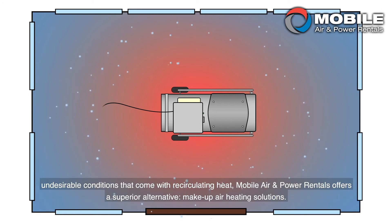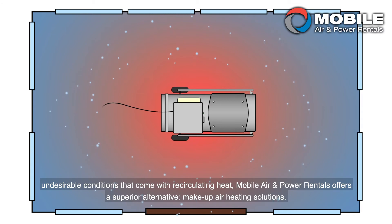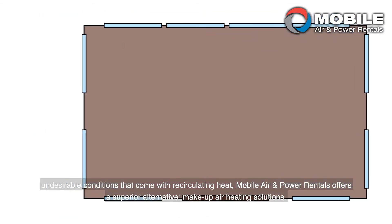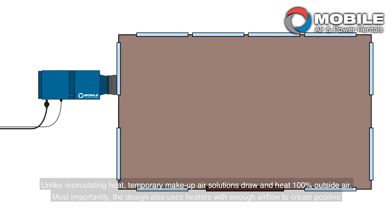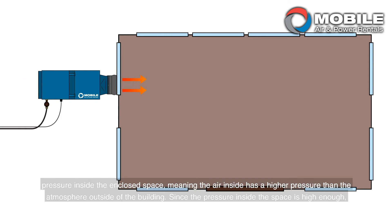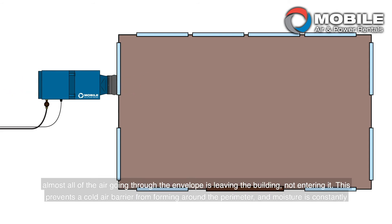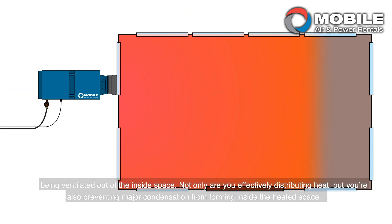To avoid the potentially undesirable conditions that come with recirculating heat, Mobile Air and Power Rentals offers a superior alternative: make-up air heating solutions. Unlike recirculating heat, temporary make-up air solutions draw and heat 100% outside air. Most importantly, the design also uses heaters with enough airflow to create a positive pressure inside the enclosed space, meaning the air inside has a higher pressure than the atmosphere outside. Since the pressure inside is high enough, almost all of the air going through the envelope is leaving the building, not entering it. This prevents a cold air barrier from forming around the perimeter, and moisture is constantly being ventilated out. Not only are you effectively distributing heat, but you're also preventing major condensation from forming inside the heated space.